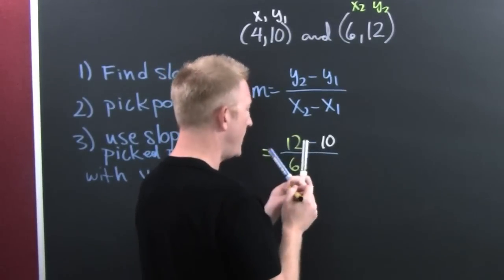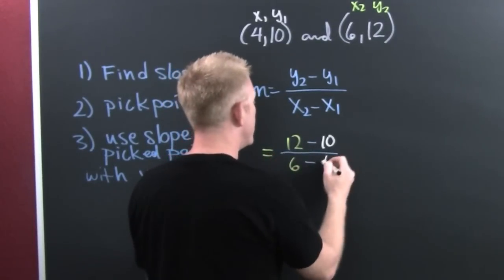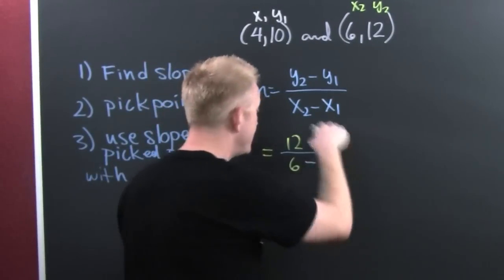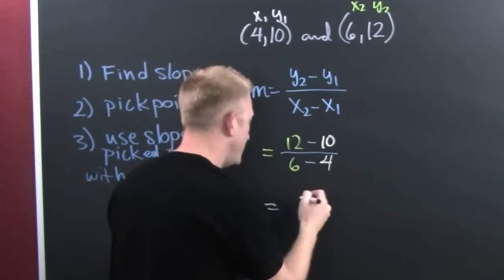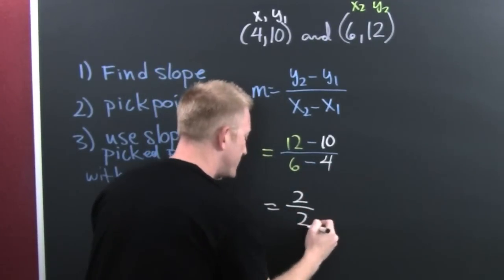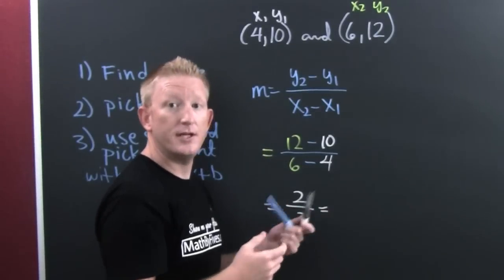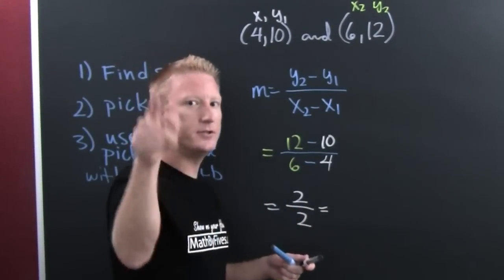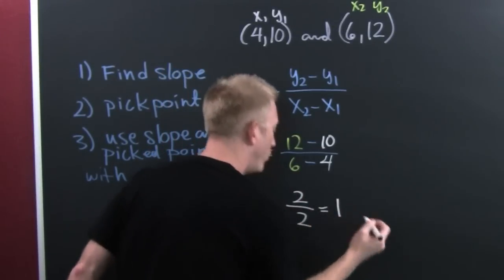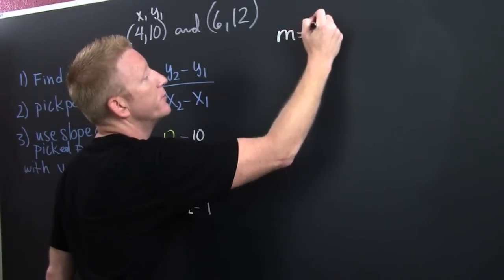Then divided by my x2, which is 6, minus my x1, which is 4. Finish him. 12 minus 10 is 2 divided by 6 minus 4, which is also 2. So now what do you do? You reduce. And you reduce, you deduce that you can reduce by a deuce, and your slope is 1.